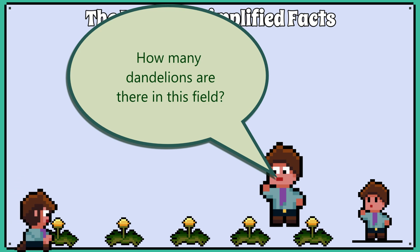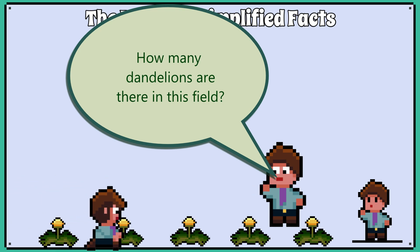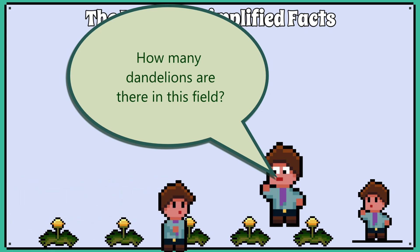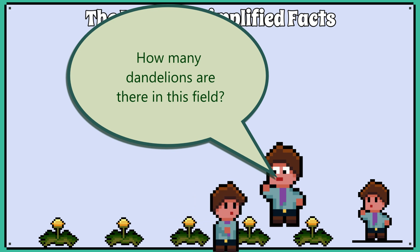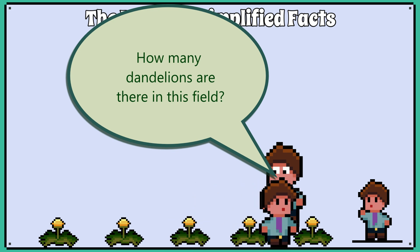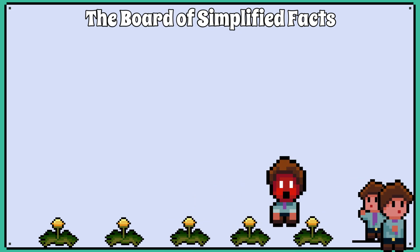Quadrats are used to investigate the abundance of a species within an area without the need to go out and count every individual organism and get a perfect true value, because it's impossible.